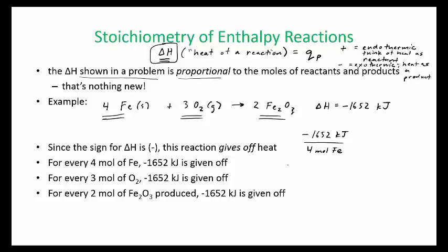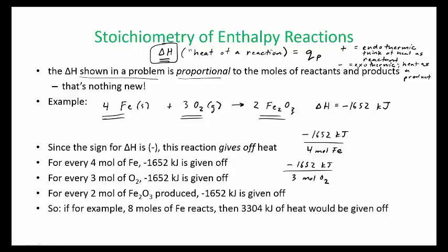Okay, this 1,652 kilojoules is also per 3 moles of O2. Okay, and likewise, it's per 2 moles of iron oxide. So, okay, and these are some of the ratio examples I was saying.